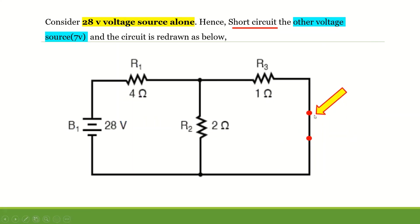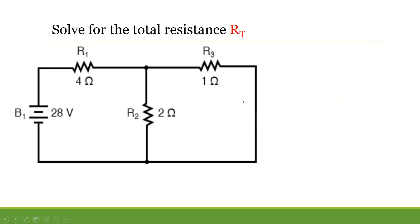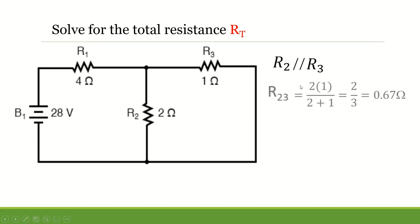We remove or turn off the 7-volt source, so now the circuit will look like this. To solve for the total resistance first, R2 and R3 are in parallel. Using our equation for parallel resistors — product divided by sum — so 2 multiplied by 1 divided by 2 plus 1, and you will get 0.67 ohms.